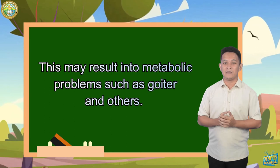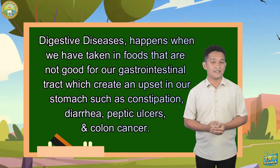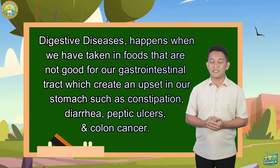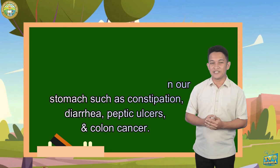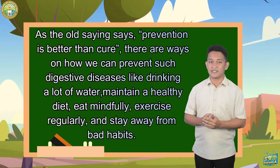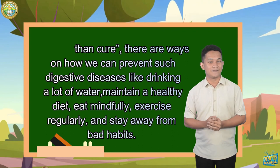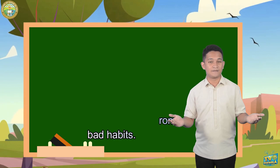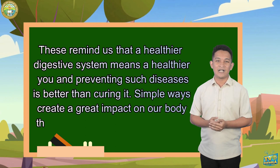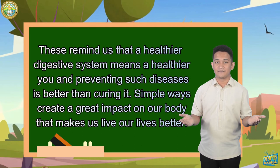Now let's look at some common digestive diseases. Digestive diseases happen when we consume foods that are not good for our gastrointestinal tract, creating an upset in our stomach — such as constipation, diarrhea, peptic ulcers, and colon cancer. As the old saying goes, prevention is better than cure. Ways to prevent digestive diseases include: drinking a lot of water, maintaining a healthy diet, eating mindfully, exercising regularly, and staying away from bad habits. A healthier digestive system means a healthier you, and preventing such diseases is better than curing them. Simple ways create a great impact on our body that helps us live our lives better.